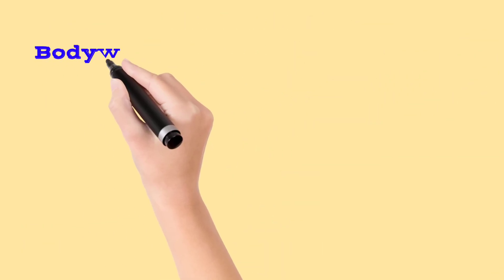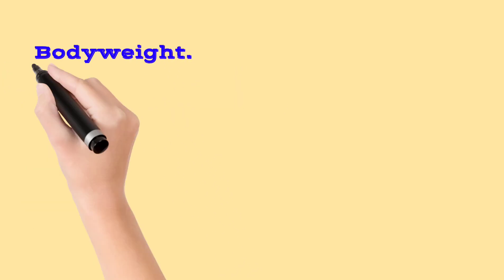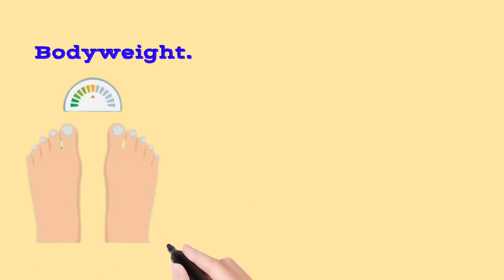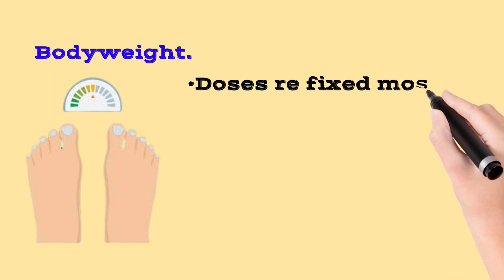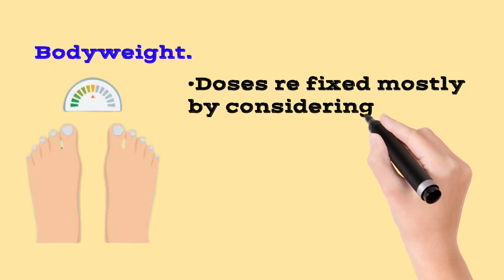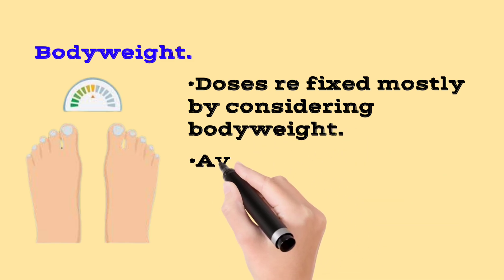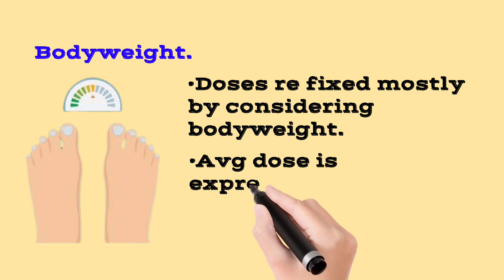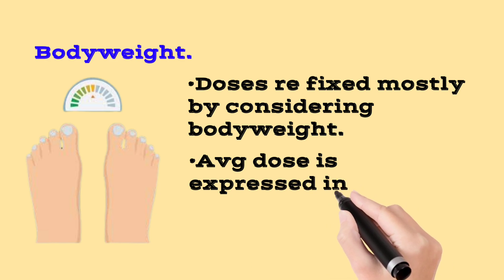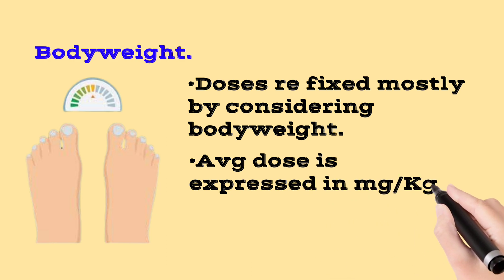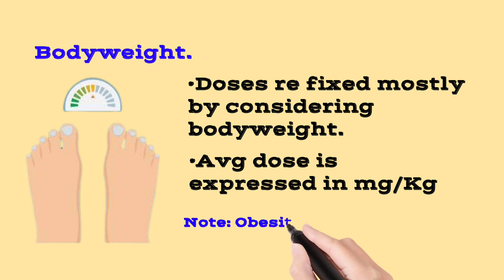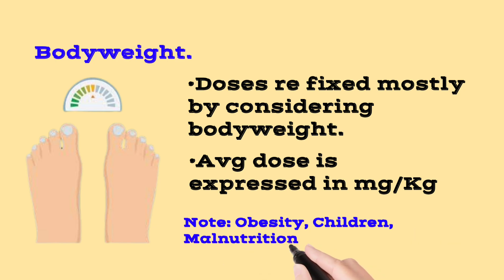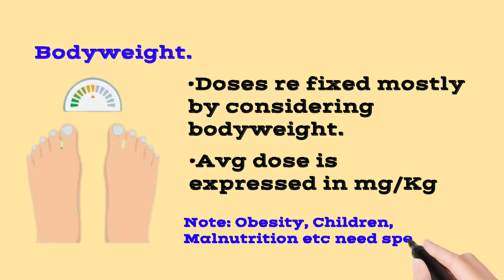The next factor is body weight. Body weight is also an important factor. Most of the time, one dose is fixed for a patient as an average dose, and body weight is considered in terms of mg per kg. Special consideration is given for obese, malnourished, or underweight patients.